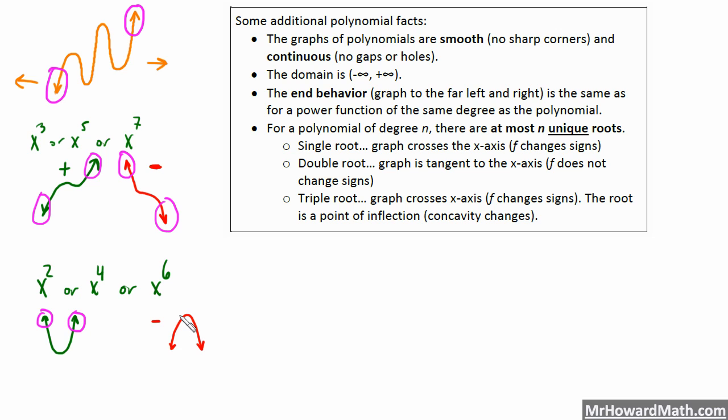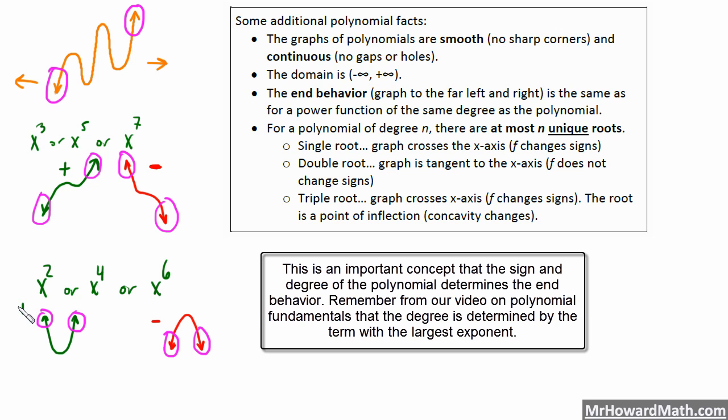And we will see what goes on in between the end behavior can vary, but the end behavior you can always predict based on what degree you have. So that's what we're talking about. When we say end behavior, that's what we're talking about. What happens all the way to the right on the graph and all the way to the left on the graph? So as x approaches positive infinity and as x approaches negative infinity.